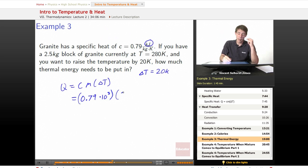We multiply by the mass, 2.5 kilograms times the change we want to affect. So we want a change of 20. We put it all together and we get 39,500 joules. And if we were curious how many kilojoules that would be,